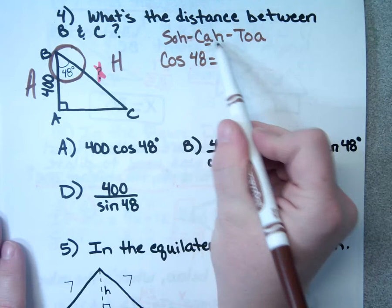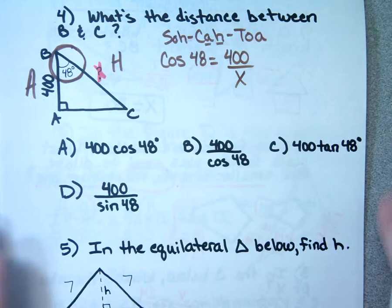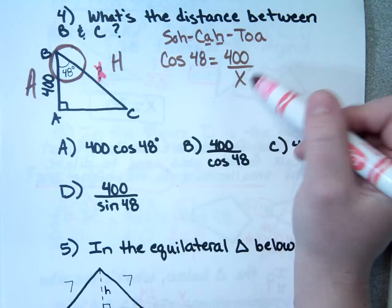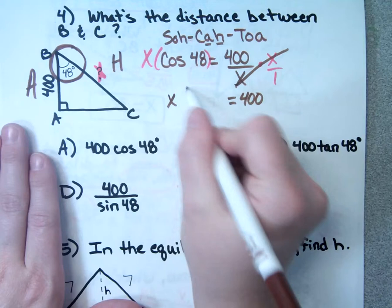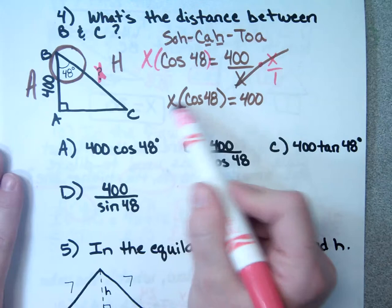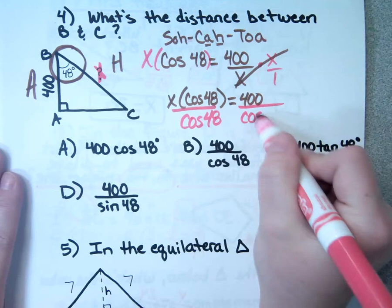If X is ever in the denominator, you've got to pop him up by multiplying both sides by X. The X's cancel on the right-hand side, leaving 400. On the left-hand side, I bring that down, then divide by cosine of 48. Notice this is a multiple choice question — the answer is B. You have to know how to work it out to identify the correct answer choice.